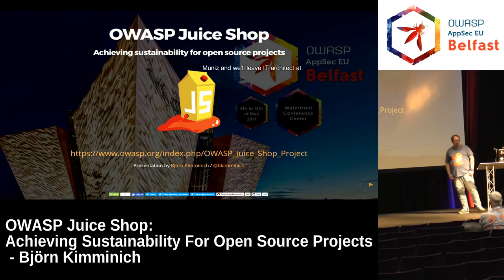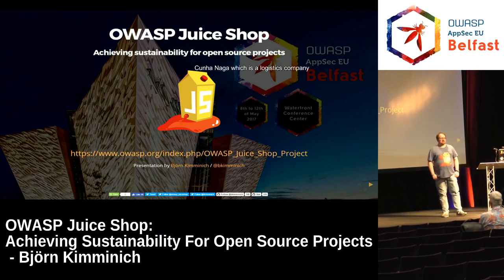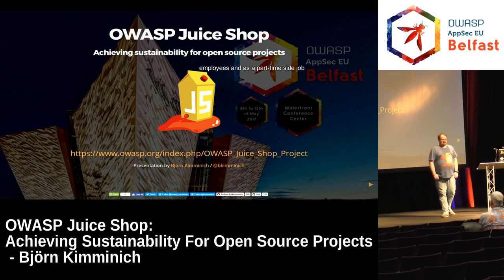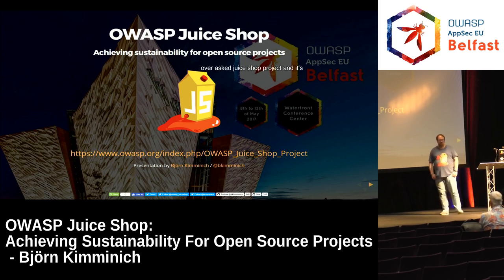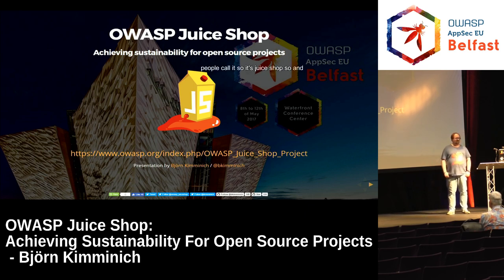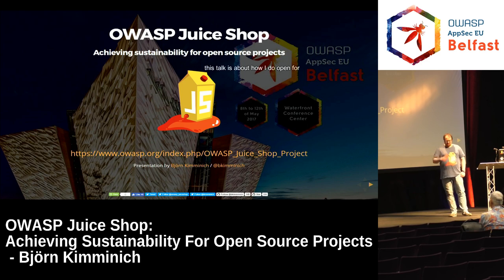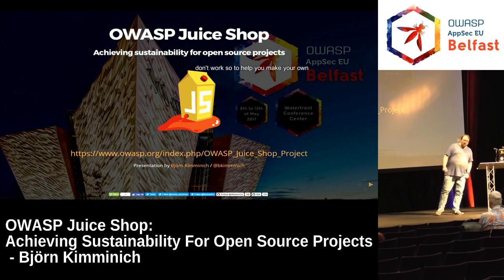Welcome. My name is Björn Kimmelich. I'm the lead IT architect at Kühn & Nagel, a logistics company based in Switzerland and Germany with almost 70,000 employees. As a part-time side job, I'm the project lead of the OWASP Juice Shop project — it's called Juice Shop, not Juice Box. This talk is about how I do open source development and I'd like to share things that work and don't work, to help you make your own open source projects better.